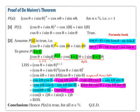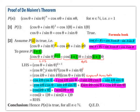Let's focus on the left-hand side: cos θ + i sin θ to the power of k+1. This can be broken down as cos θ + i sin θ to the power of k, multiplied by cos θ + i sin θ to the power of 1, because k+1 is k plus 1. Next we apply our assumption: cos θ + i sin θ to the power of k equals cos kθ + i sin kθ.